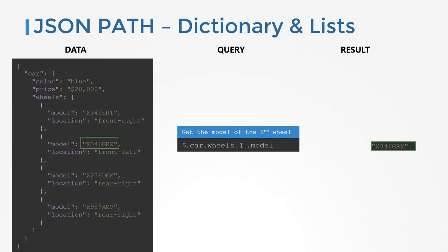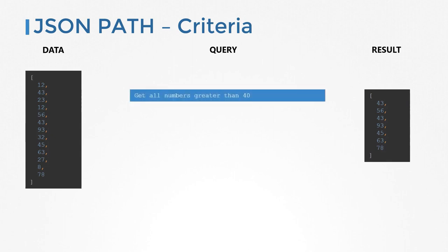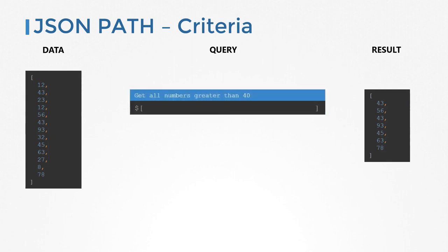Finally, let us look at applying some basic criteria or conditions to our query. Why do you need criteria? Here I have a set of data — basically a bunch of numbers. What if we want numbers greater than 40? We start with the dollar symbol for the root element. Since the root element is an array, we use square brackets. Within the square brackets, we use a question mark followed by parentheses to specify a criteria or filter. Within the parentheses, we say check whether each item in the list is greater than 40. The at symbol means 'each item in the list'.